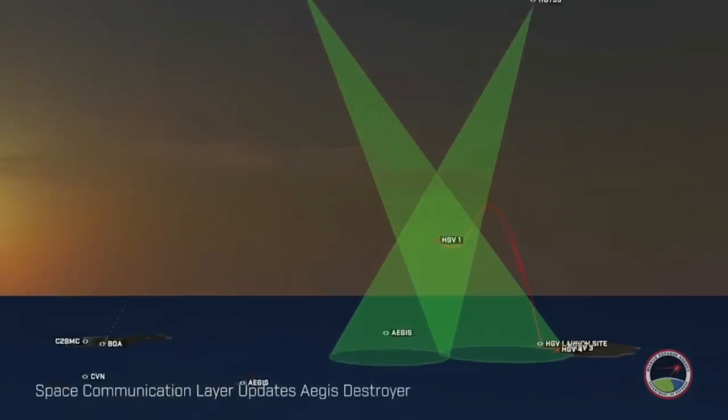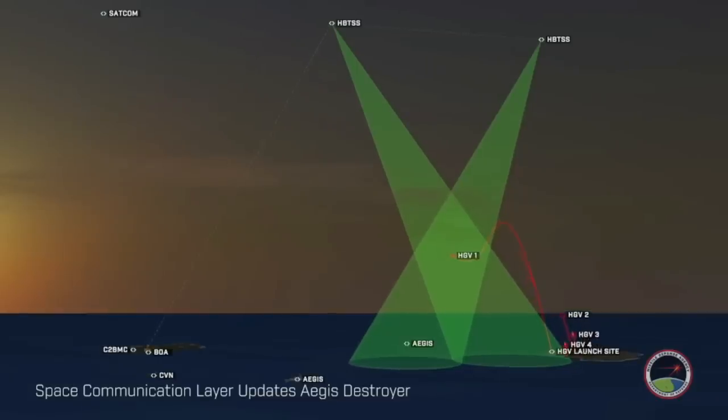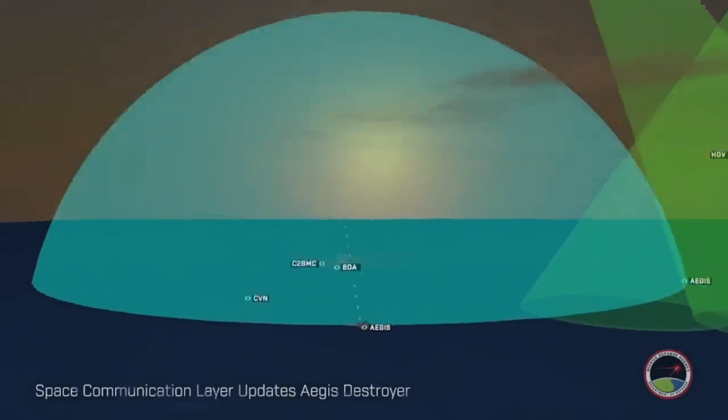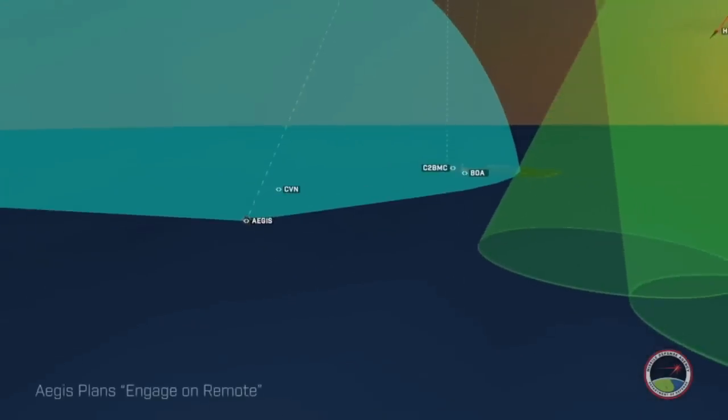Positioning and tracking data are continuously captured and sent through the HBTSS to BOA, then sent through the space communication layer to the Aegis Destroyer. The Aegis Destroyer uses remote tracking information from the HBTSS to plan and engage on remote.